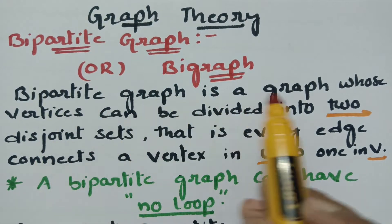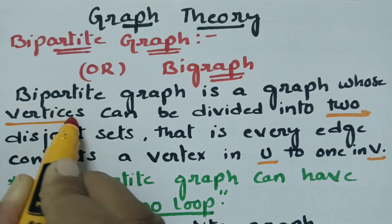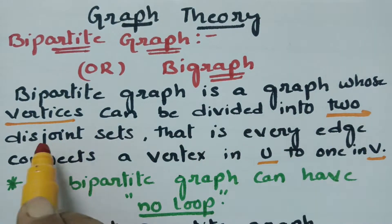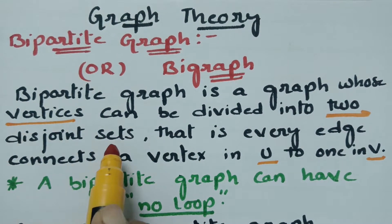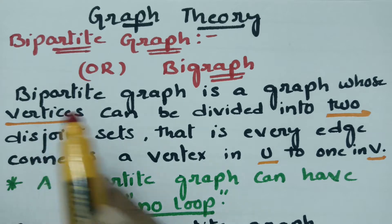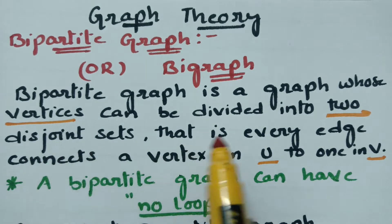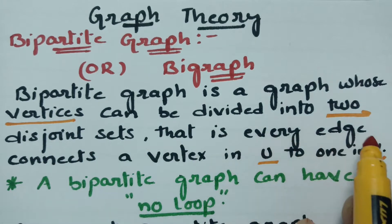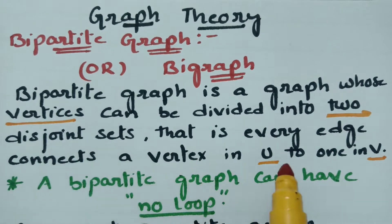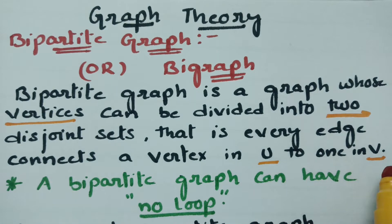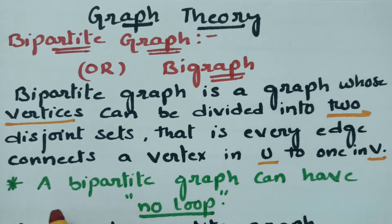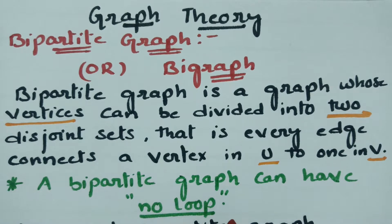A bipartite graph is a graph whose vertices can be divided into two disjoint sets, such that every edge connects a vertex in U to one in V. Note that a bipartite graph can have no loop.